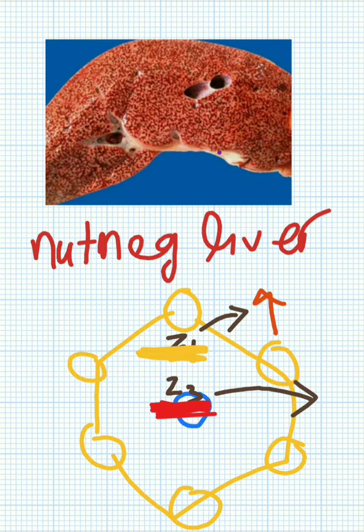When you look at this nutmeg liver picture you can see certain areas have dark red spots and certain areas are tan yellow. That is actually these two regions. Where you get dark red, that is the pericentral. The other one is periportal where you get tan yellow.